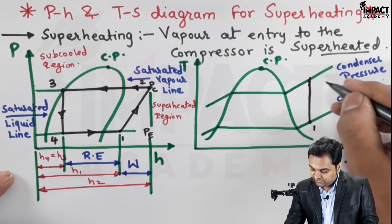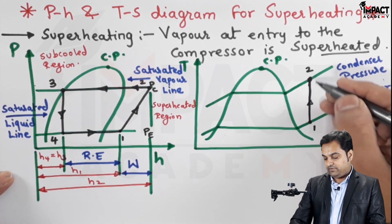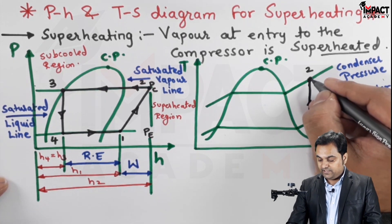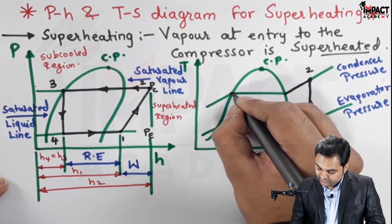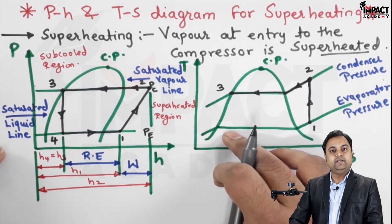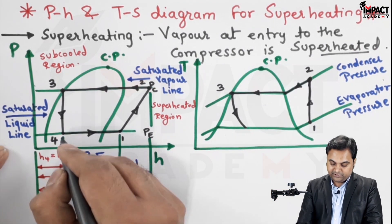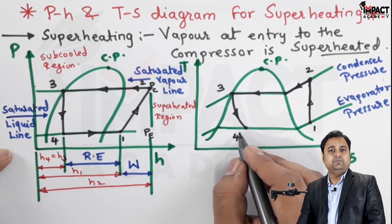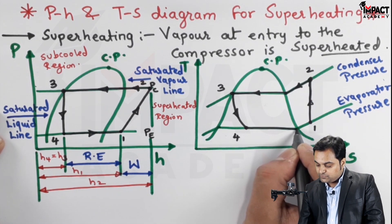The temperature increases from T1 to T2. At point one the vapor is superheated, and at point two it is further superheated with higher temperature. The vapor then enters the condenser at point two and gets condensed into saturated liquid up to point three. Throttling is constant enthalpy, shown as a curve on the T-S diagram — unlike the vertical line on the P-H diagram. At point four, the liquid refrigerant exits the throttle valve and enters the evaporator, absorbing heat from point four to point one.